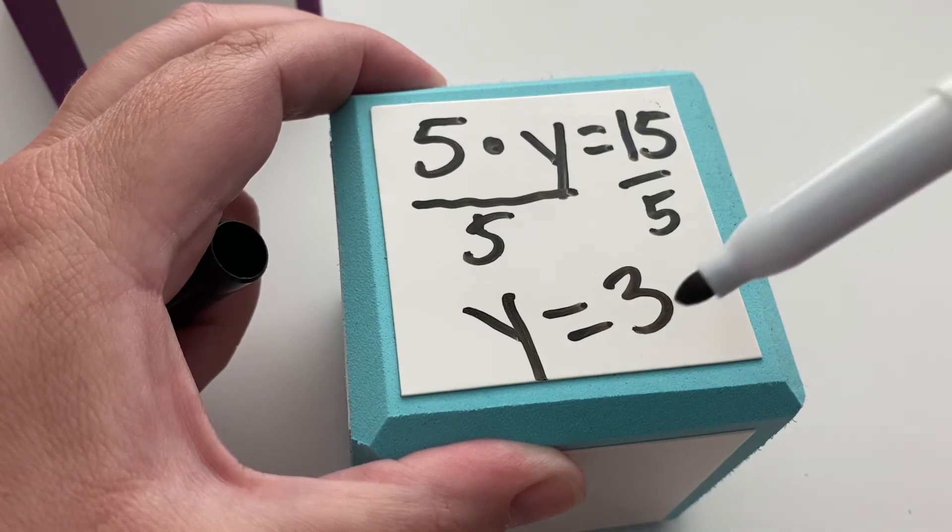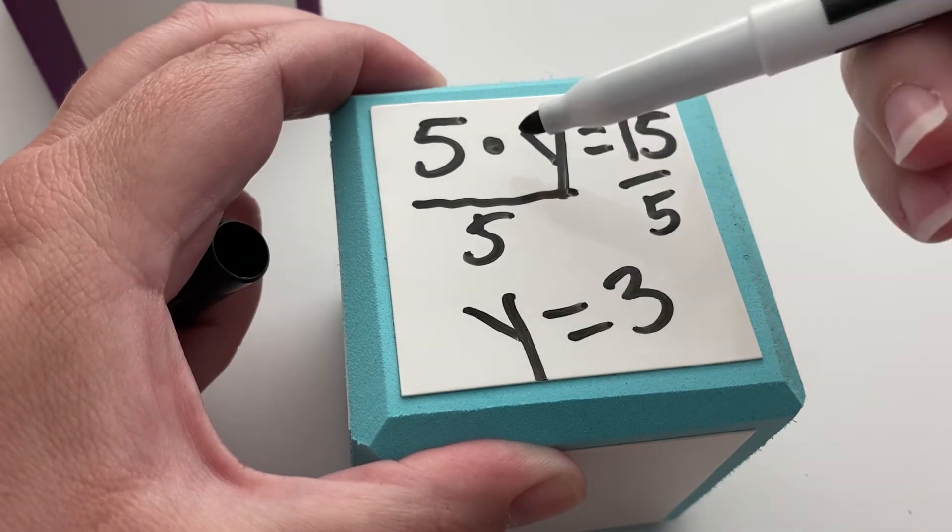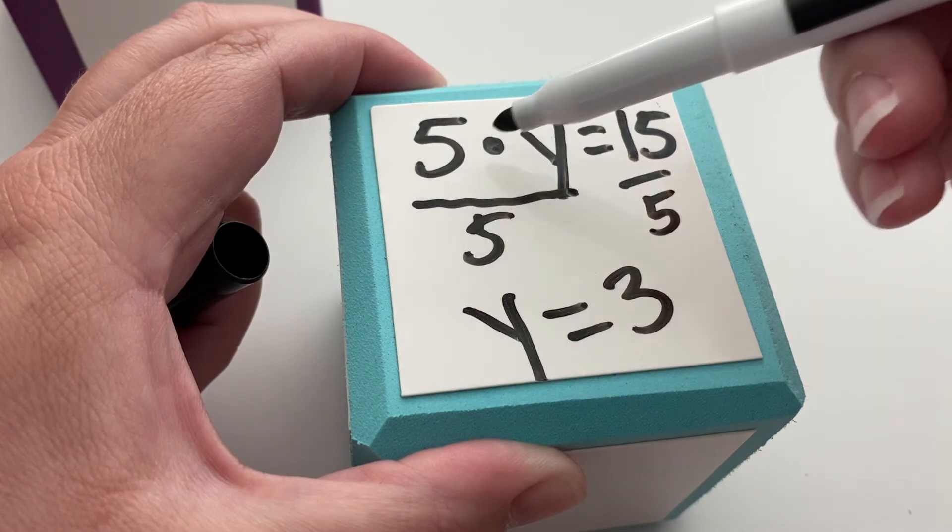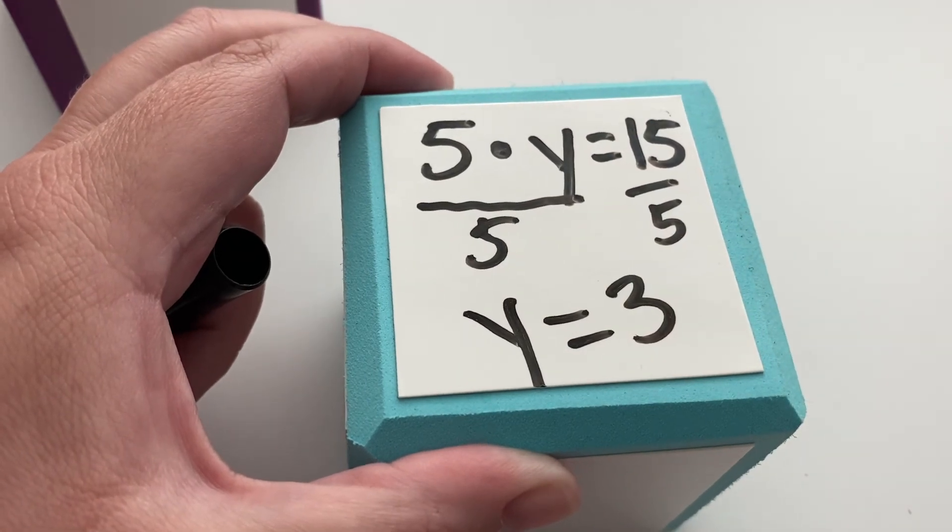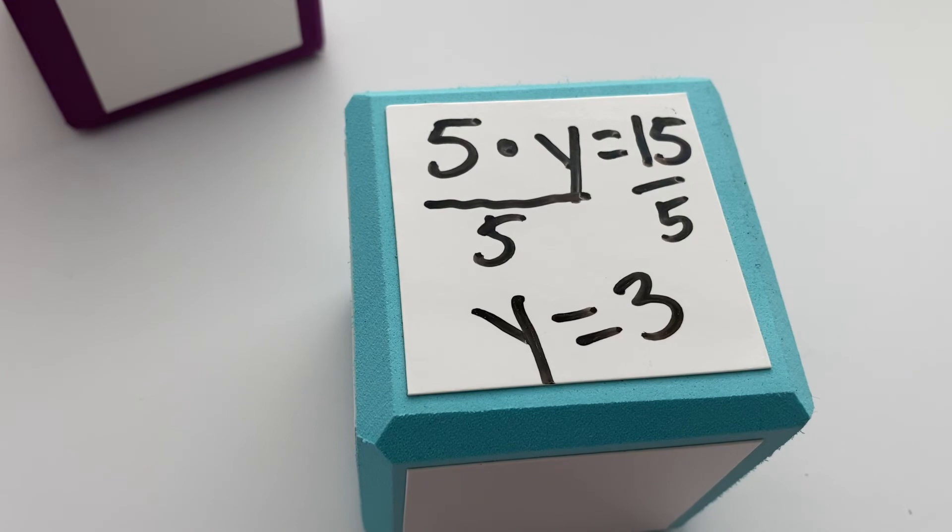And you can always go back and check. Substitute 3 for y. 5 times 3 equals 15. That is a true number sentence right there, a true equation, so that makes it correct. Okay. Well, thank you. Great lesson. And we'll talk to you soon. Bye.